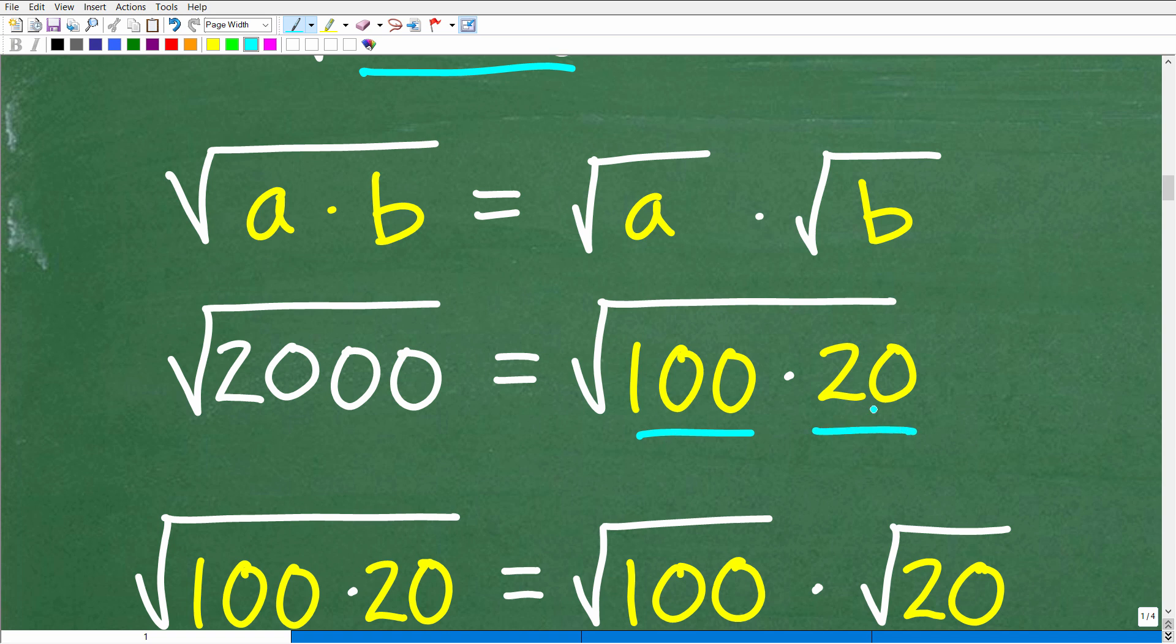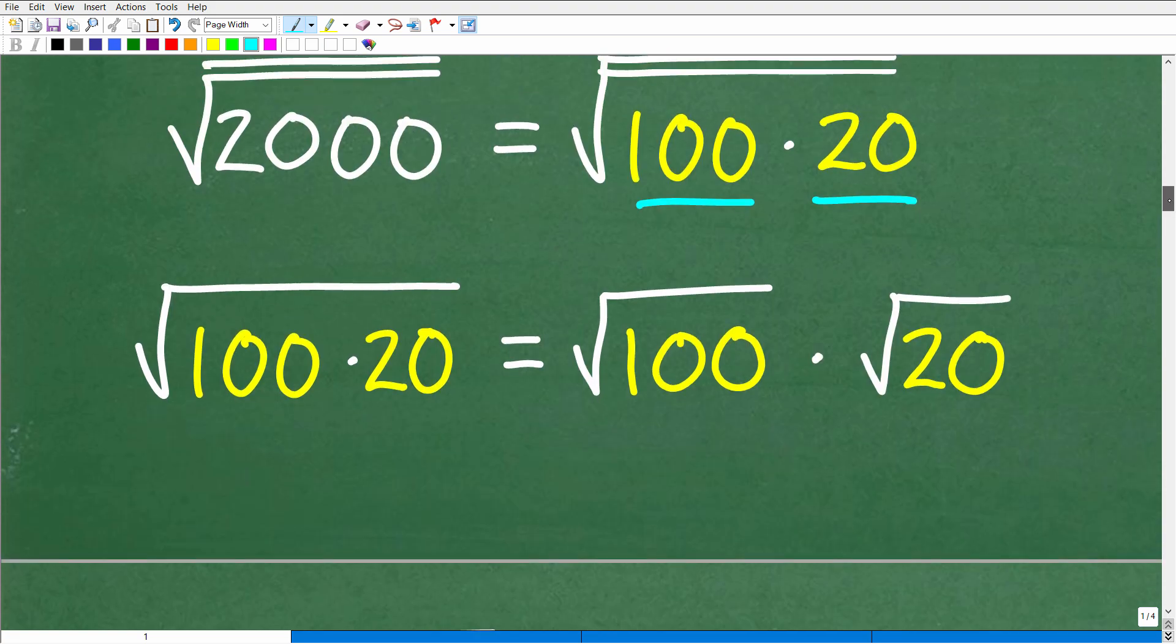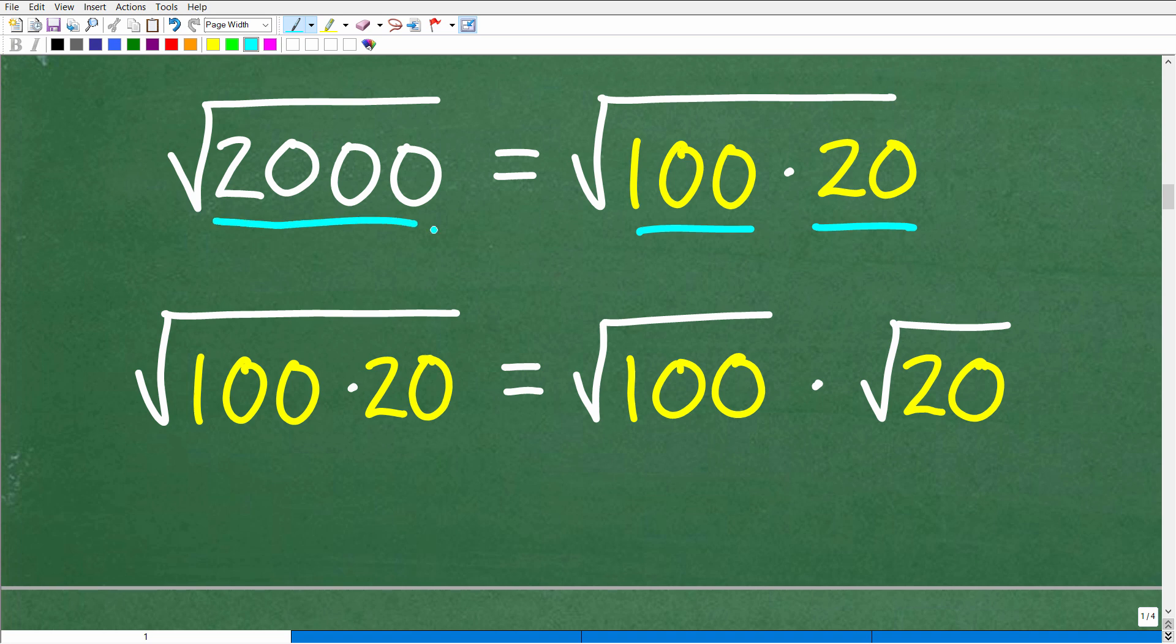Okay, so I'm going to break up 2,000 as 100 times 20. Again, you can break this up into other factors as long as one of these factors is a perfect square factor. That's what you're looking for. All right, so let's go ahead and continue now.